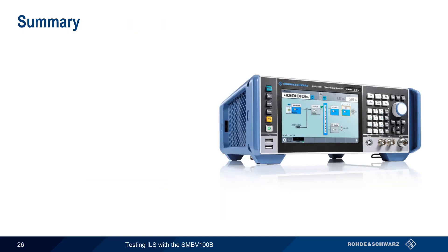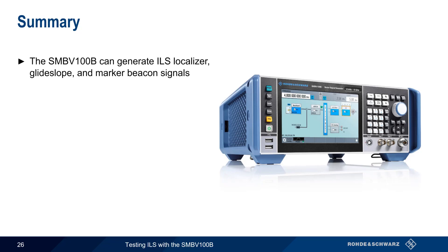Let's summarize the main points regarding ILS signal generation. The Rohde & Schwarz SMBV100B vector signal generator can be used to generate all three components of ILS – the localizer, glide slope, and marker beacon signals. Note however that only one of these modulation types can be active at a time.